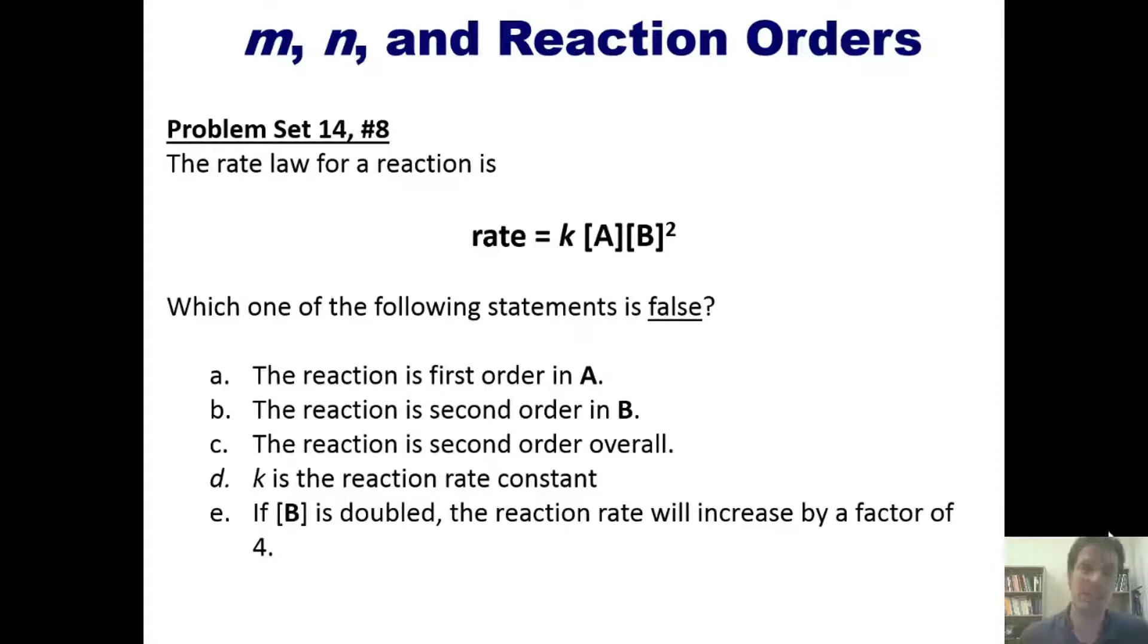The rate law for a particular generic reaction is given according to this equation. Which of the following statements is false? The reaction is first order with respect to A. The reaction is second order with respect to B. The reaction is second order overall. K is the reaction rate constant, or if B is doubled the reaction rate will increase by a factor of four. I'm not going to answer this question for you but we'll let you think about it and see if you can come up with the answer for yourself.